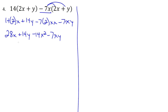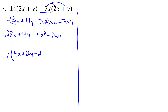Cleaning up we get 28x + 14y - 14x² - 7xy. There are no like terms, so now we common factor. The GCF of coefficients 28, 14, 14, and 7 is 7. Checking x: there's an x, no x, x², and x — because the second term has no x, we can't pull out any x. Checking y: y appears in some terms but not others, so we can only pull out the 7. That gives 7(4x + 2y - 2x² - xy).